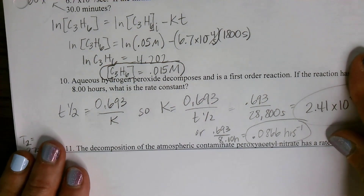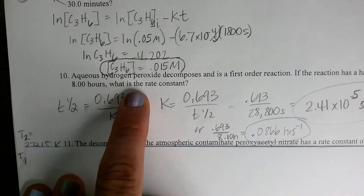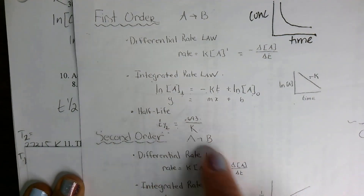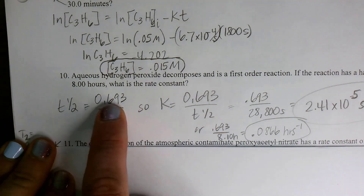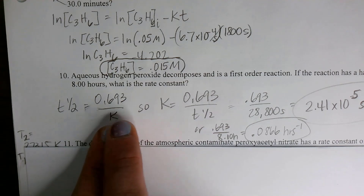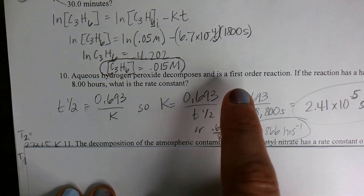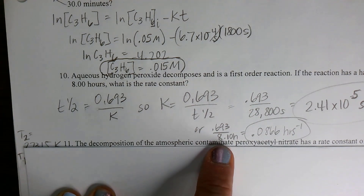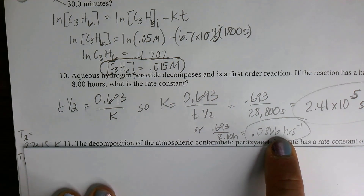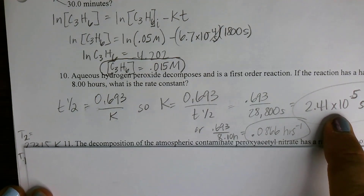Moving on to number 10. Hydrogen peroxide decomposes in a first-order reaction with a half-life of 8 hours. The first-order half-life equation is t₁/₂ equals 0.693 over K. Rearranging, K equals 0.693 divided by the half-life. With a half-life of 8 hours, K equals 0.0866 inverse hours. Converting to seconds gives K equals 2.41×10⁻⁵ inverse seconds.